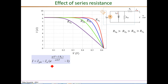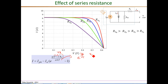Looking at the equation for the PV cell model, the effect of the series resistance shows up as the drop I times RS. This quantity is the diode voltage V_D, and AKT over Q is the thermal voltage V_t. The exponential term is e to the power of V_D over V_t. When V_D is significantly higher than the thermal voltage V_t, that is when the diode current begins to rise rapidly, and therefore the external current I begins to drop rapidly.